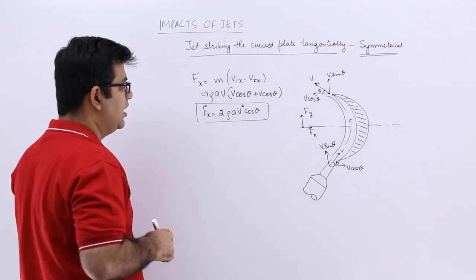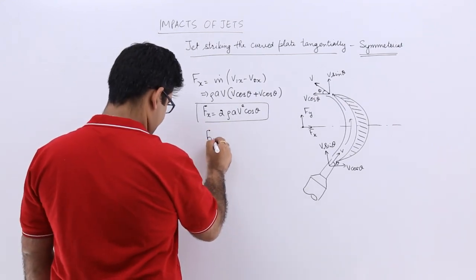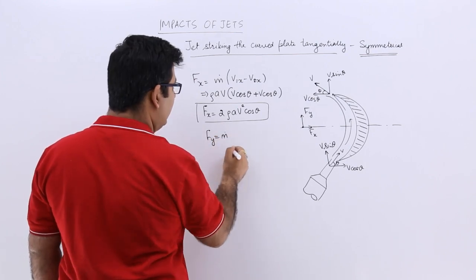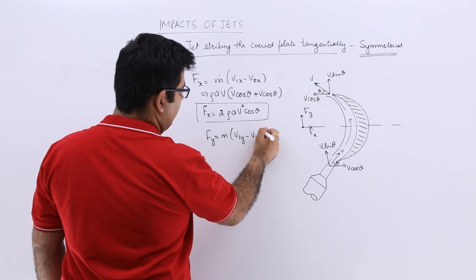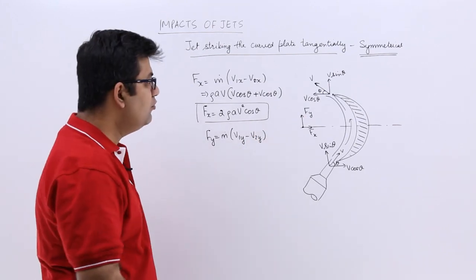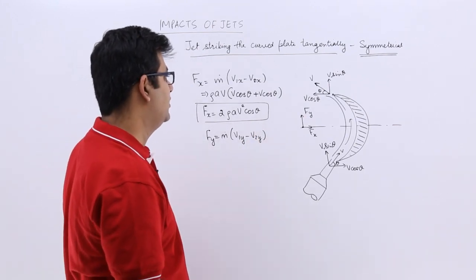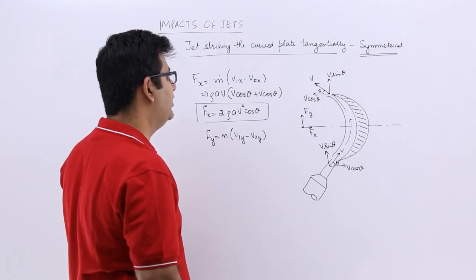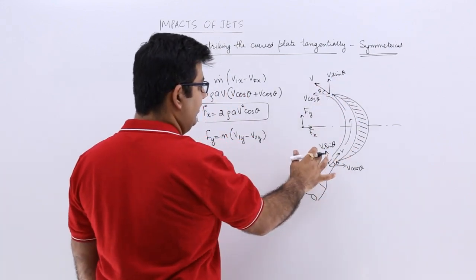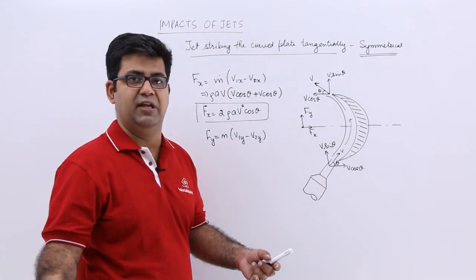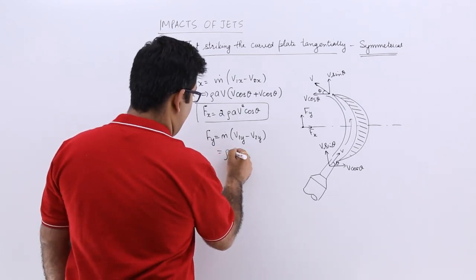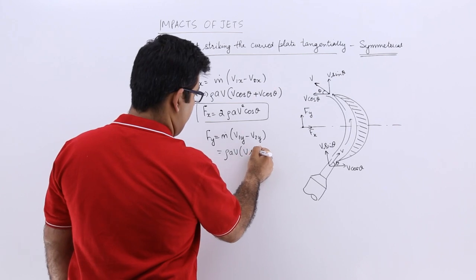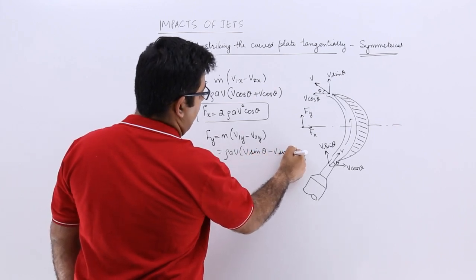Now Fy, how can you find out Fy? m dot into v1y minus v2y. Now v2y is how much? v2y is sin theta, and v1y is also sin theta, v sin theta. Both in the same direction. You will have rho a into v, v into v sin theta minus v sin theta.